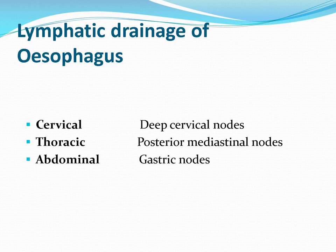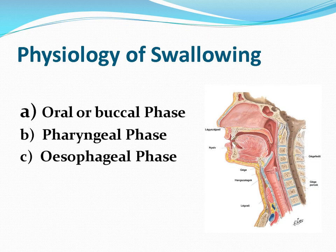There are three phases of swallowing: the oral phase, the pharyngeal phase, and the esophageal phase. These are important in understanding the different levels at which dysphagia can occur.